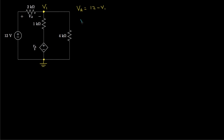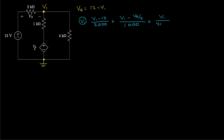Now let's write the single node equation at the node labeled V1. The current flowing in this direction is V1 minus 12 divided by 2,000. The current flowing in this direction is V1 minus VA over 2, divided by 1,000 ohms. Then we have V1 minus 0 divided by 4,000, which is V1 over 4,000. All of that is equal to zero — that's our single equation.